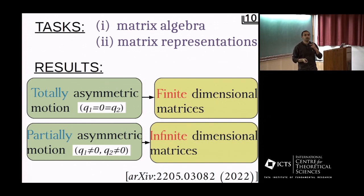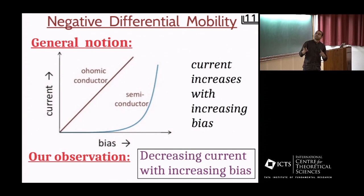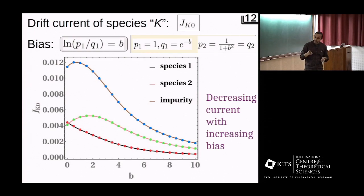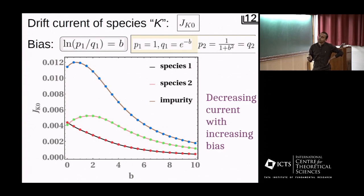The first step is done: we have obtained the exact non-equilibrium steady-state probability distribution. Now we can calculate observables of interest. For today's talk I'll focus on two specific properties exhibited by this model. The first one is negative differential mobility. Generally, current increases with increasing bias, but for our model, for a specific choice of microscopic dynamics, the current decreases with increasing bias. In the two-species setup with impurities, the right hop rate of species one is chosen to be one and the left hop rate as e to the power minus b, where the parameter b acts as the bias. Species two is considered unbiased, with its magnitude taken as a decreasing function of b. Plotting the currents of different species and impurities as a function of bias, for high values of bias the currents of species one, species two, and the impurity all decrease with increased bias — indicating negative differential mobility.